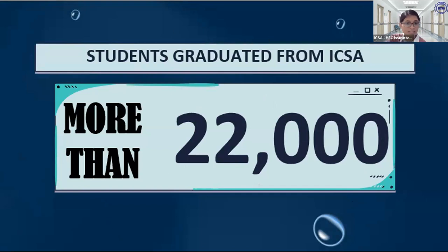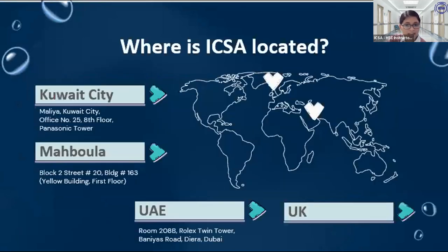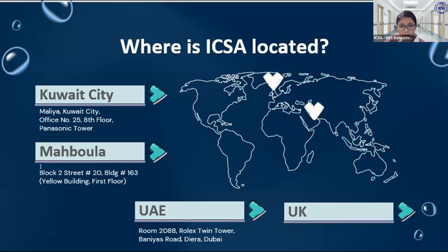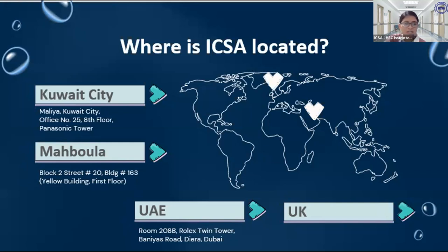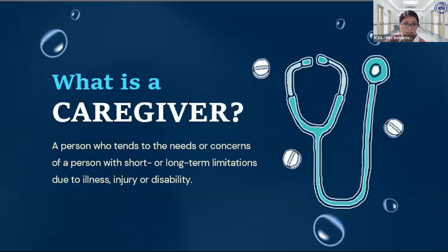Students graduated from ICSA now number more than 22,000, which shows that a lot of students have trusted ICSA. We have several branches: Kuwait City in Malia, Panasonic Tower 8th floor office 25; Mahaboula in Block 2, Street 20, Building 163 (the yellow building, first floor); UAE in Room 2080, Rolex Green Tower, Banias Road, Deira, Dubai; and partners in the UK.